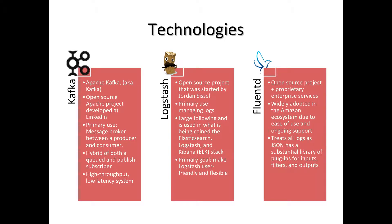Logstash is an open-source project, but its primary use is significantly different than that of Kafka, as it's focused on managing logs. Similar to Logstash, Fluentd is an open-source project, but also offers proprietary enterprise services, and additionally it is widely utilized within the Amazon ecosystem.